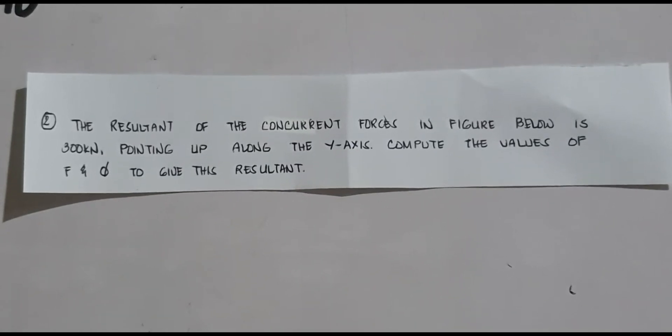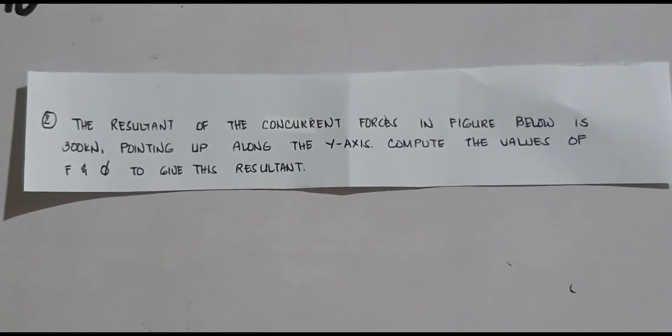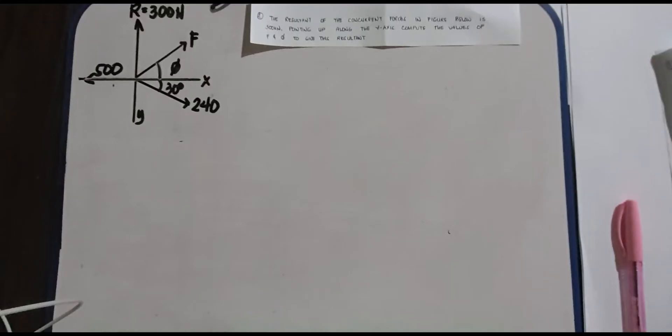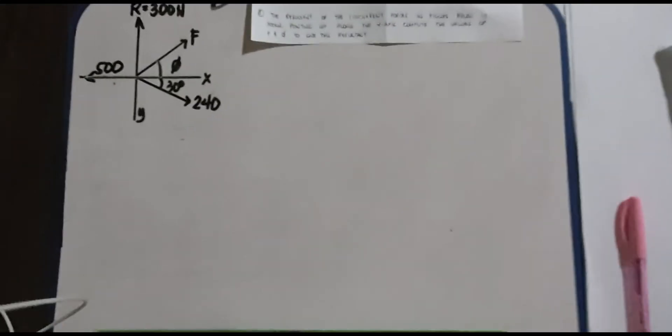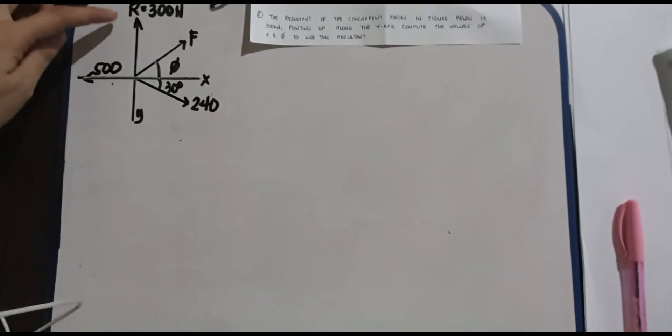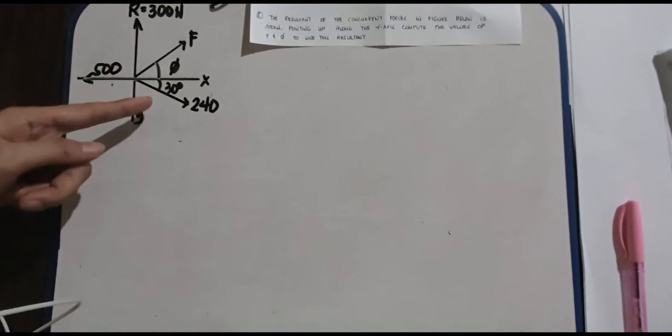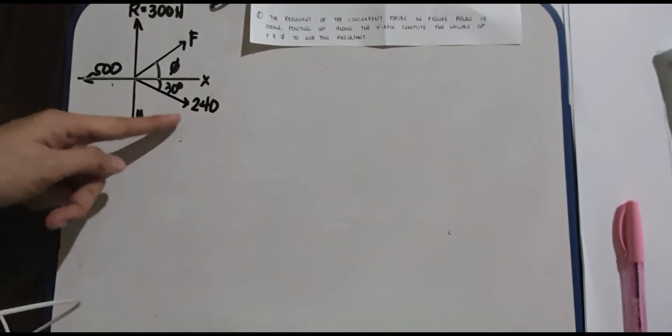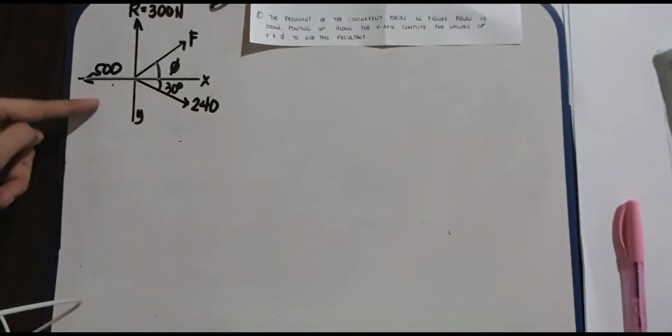Okay, another example. The resultant of concurrent forces in the figure below is 300 kN pointing up along the y-axis. Complete the values of F and phi to give this resultant. So this is the figure. As you can see, we have R equals 300, F is unknown, 250, 240, and then 30 degrees, we have 50 kN Newton.